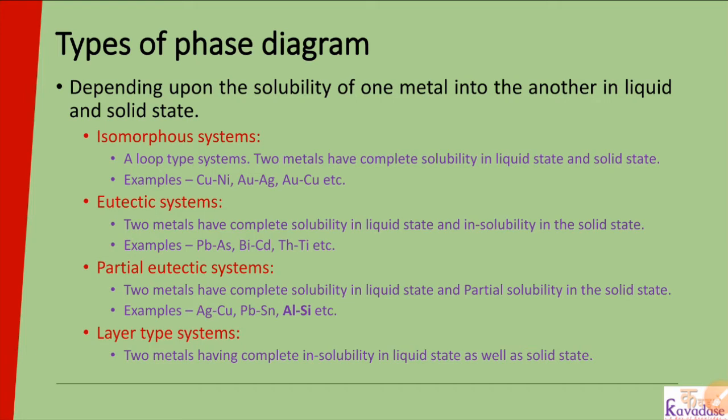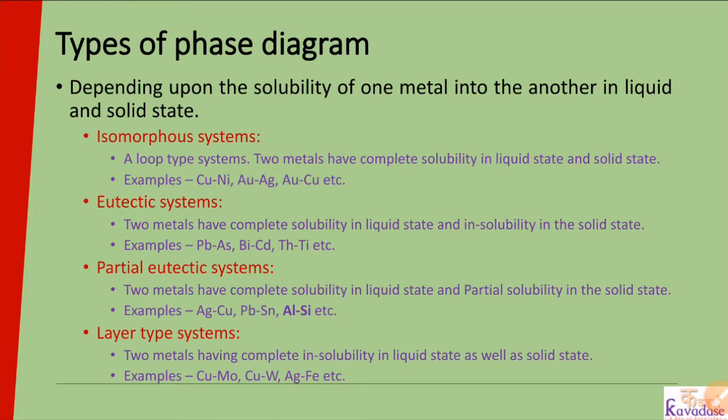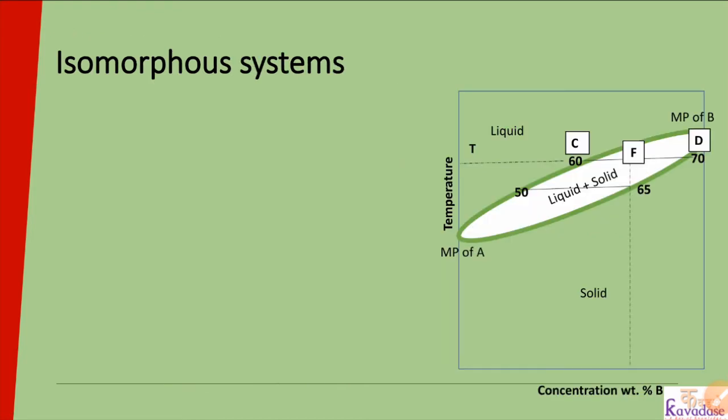Examples of layer type systems are Cu-Mo, Cu-W, Ag-Fe, etc. So these are the four types of phase diagrams: isomorphous, where metals are soluble in liquid as well as solid state; eutectic, where soluble in liquid but not in solid; partial eutectic, where soluble in liquid but partially soluble in solid; and layer type, where not soluble in liquid or solid state.